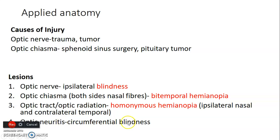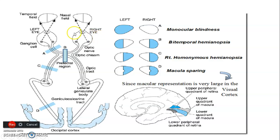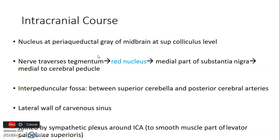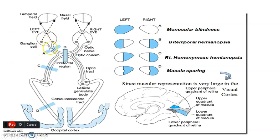Optic neuritis causes circumferential blindness. Each eye has a visual field: the middle portion is the nasal field and the lateral portions are the temporal fields. Information from the nasal field goes to the temporal part of the retina, and from the temporal field to the nasal part of the retina. Fibers from the nasal retina decussate at the chiasma, while fibers from the temporal retina do not decussate — they go directly to the lateral geniculate body. From the lateral geniculate body, another neuron carries information to the primary visual area.